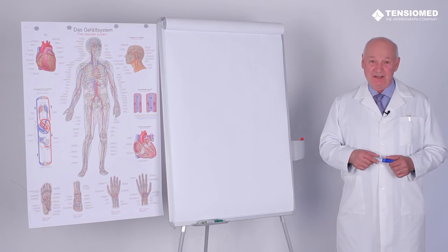Measuring arterial stiffness, we do have to use several parameters. One of the most important parameters is the aortic pulse wave velocity.